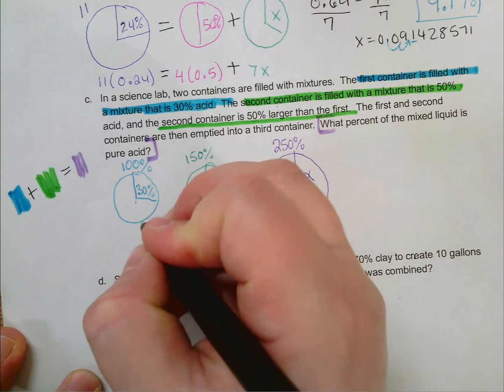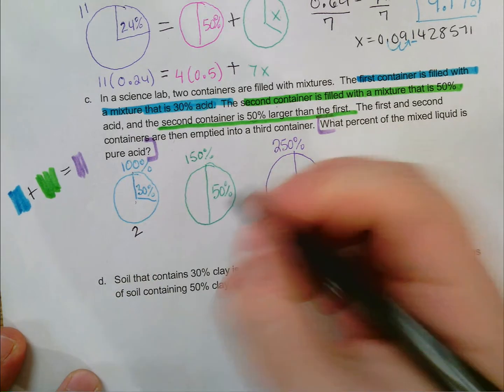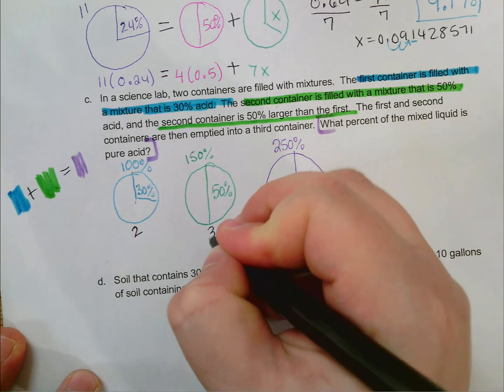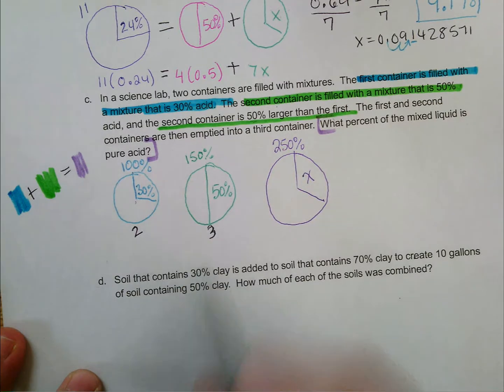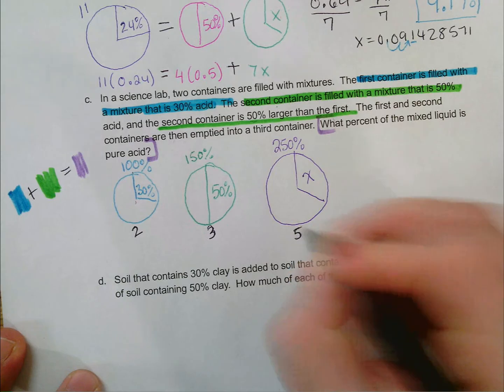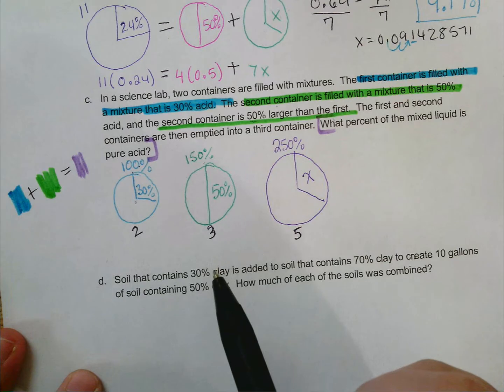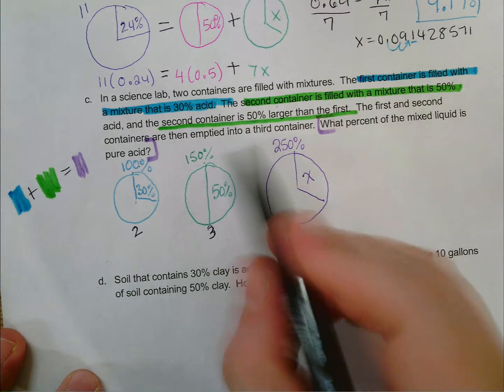So if I had said the first container was 2, the second container would have had to have been 3 because that's 50% larger. And if I had used 2 and 3, this container would have had to have been 5. And I'm just using percents to scale them differently. It does not matter which way you write it. I'm going to stick with the percent.